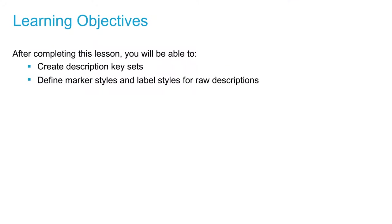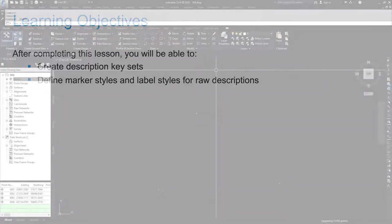In this drawing, we're going to create description key sets and define marker styles and label styles for a few raw descriptions. What description key sets do is they look at a raw description for a point and apply set styles and parameters to those points based on what the description is.